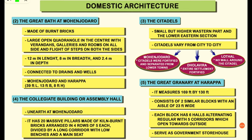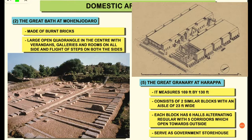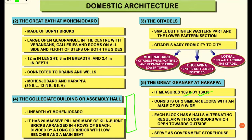The Great Granary at Harappa was the most impressive building found there. Its size is 169 feet by 130 feet, consisting of two similar blocks with an aisle of 23 feet wide. Each block has six holes alternating regularly with five corridors, with each corridor opening toward the outside. These Great Granaries served as government storehouses.